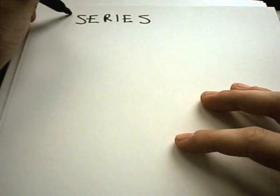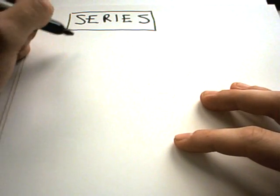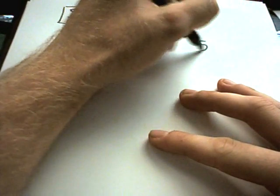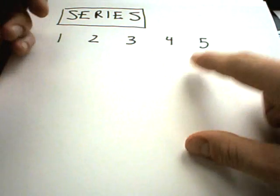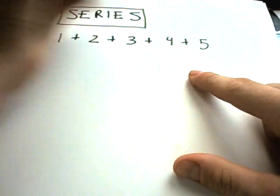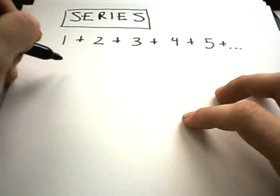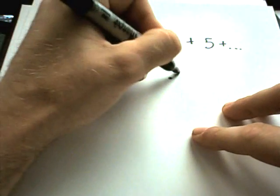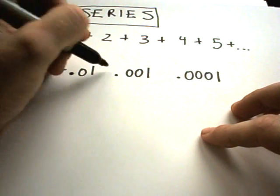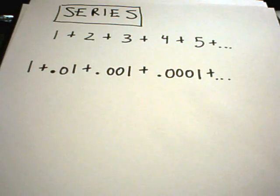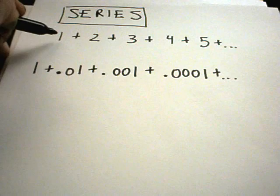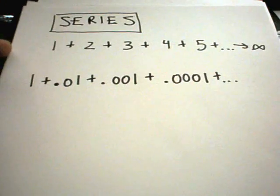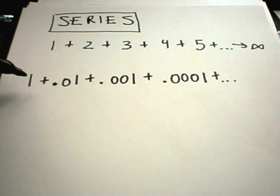Now we're going to talk about series. All a series is, is again you have a sequence — one, two, three, four, five — but now instead of just looking at the sequence, we're going to start adding up these numbers. So this would be an example of a series. You're adding up infinitely many terms, and certainly in this first example, if you add up one plus two plus three plus four plus five plus six, etc., this is going to end up just going off to infinity.